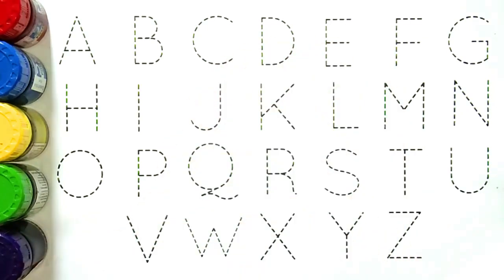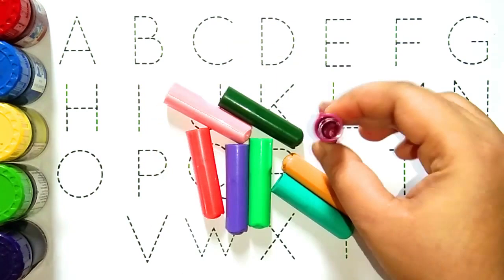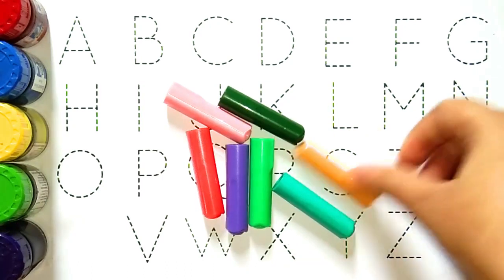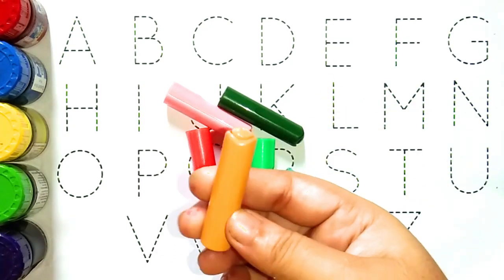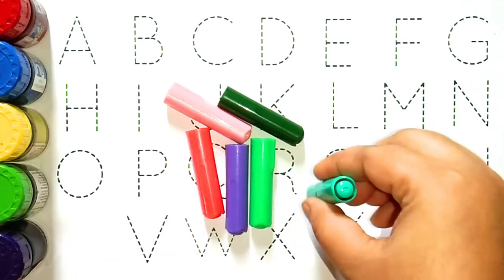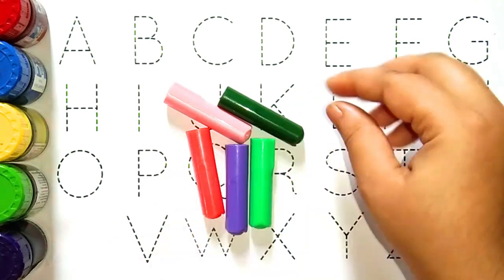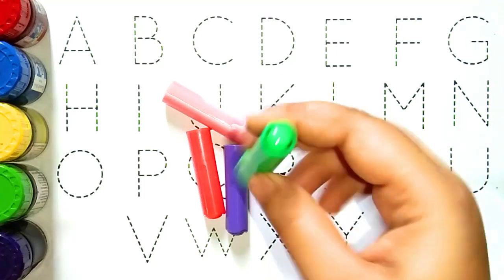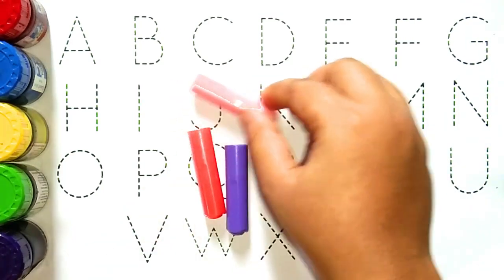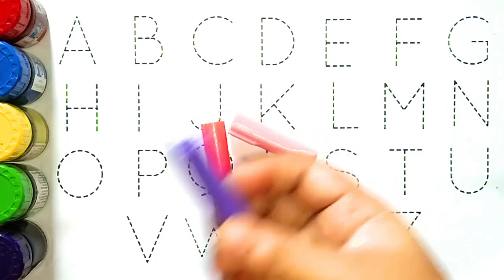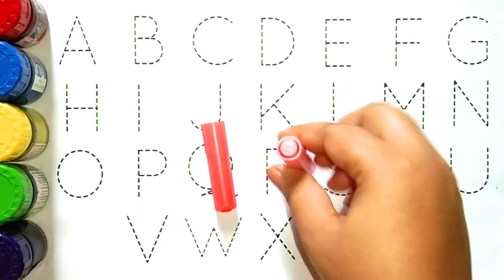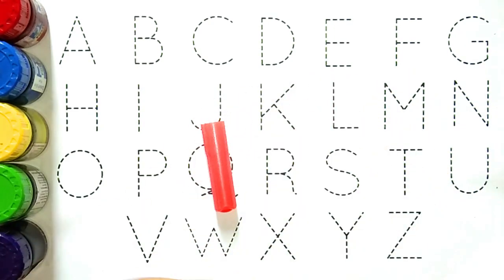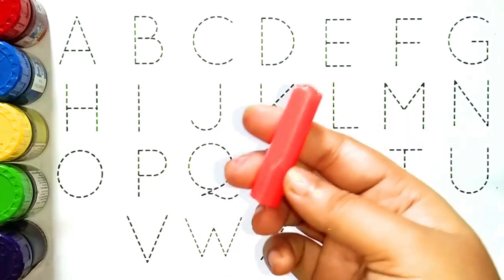Hello guys, let's learn some alphabets with colors. Magenta color, deep yellow color, sea green color, green color, light green color, violet color, light pink color, orange color.